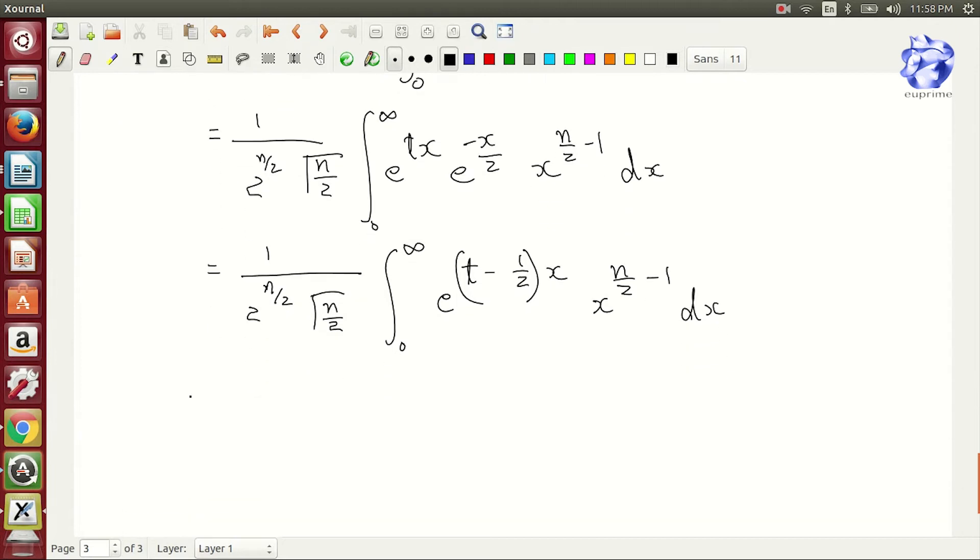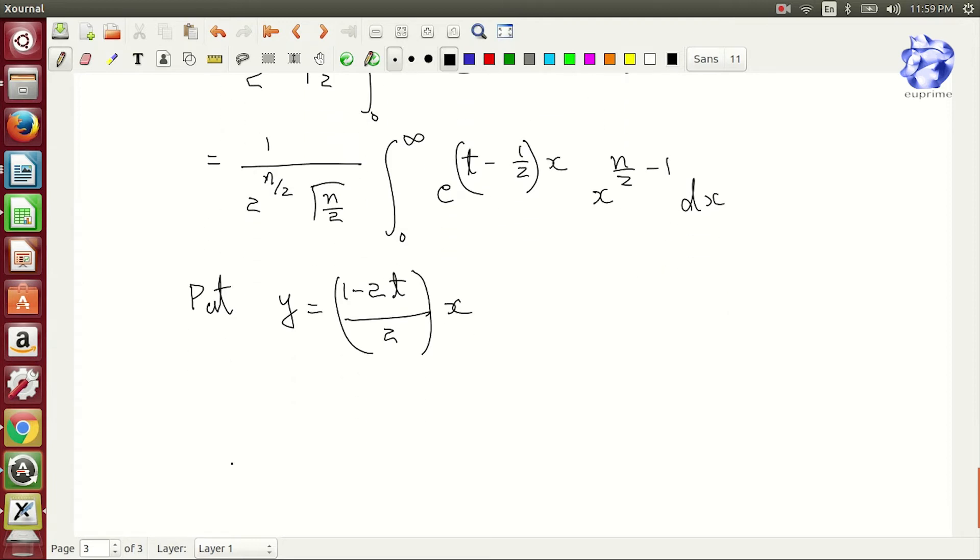Put y is equal to 1 by 1 minus 2t by 2 into x. dy is equal to 1 minus 2t by 2 dx.